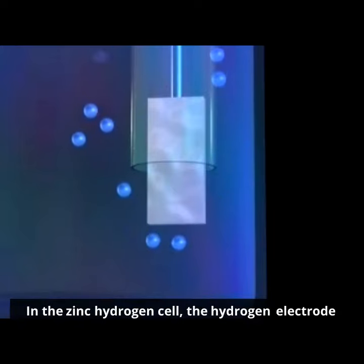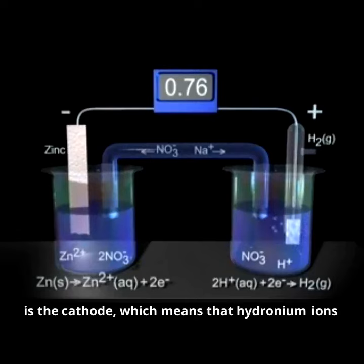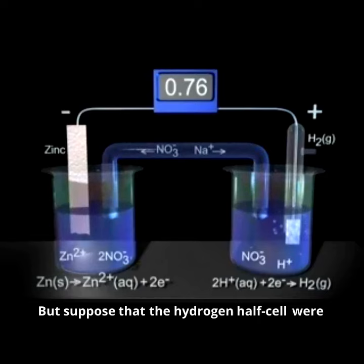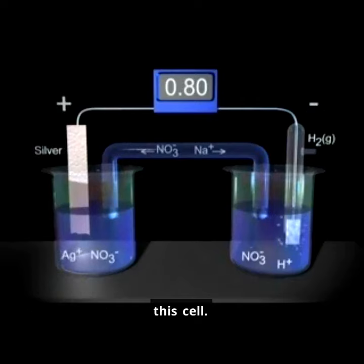In the zinc hydrogen cell, the hydrogen electrode is the cathode, which means that hydronium ions are reduced at the platinum surface. But suppose that the hydrogen half cell were paired with a half cell in which there is a strong tendency for a reduction reaction to occur, as in this cell.